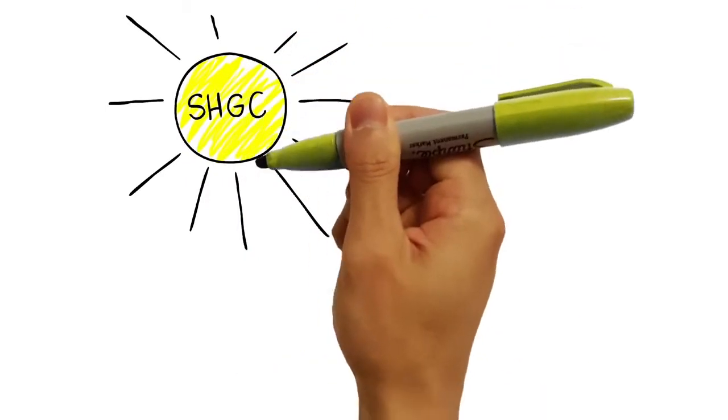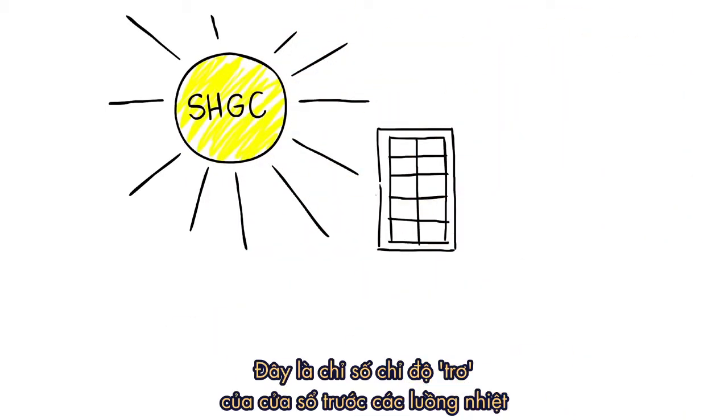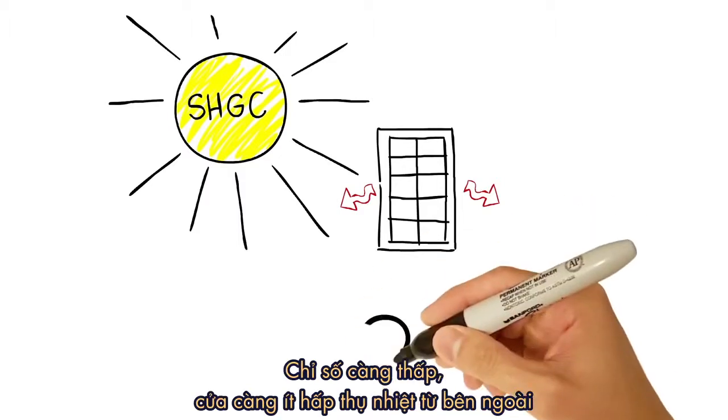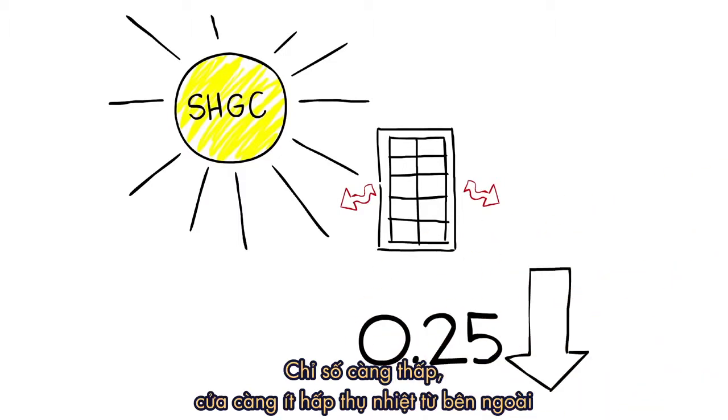Solar heat gain coefficient measures how well your window keeps the heat out. All you really need to remember is the lower the number, the less heat a window lets in.